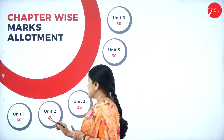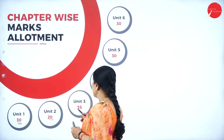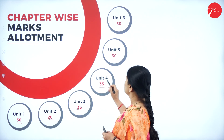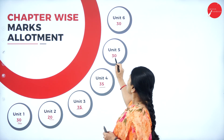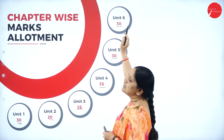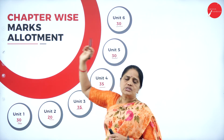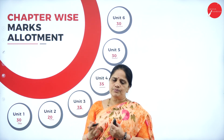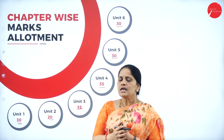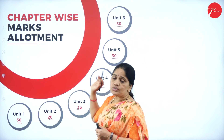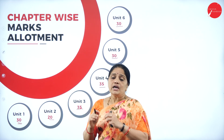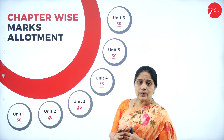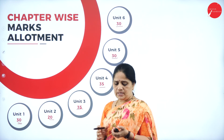For unit 2, it will be 20 marks. Unit 3, 35 marks. Unit 4, 35. Unit 5, 30. And unit 6, also 30 marks. Looking at this distribution of marks, you can see that almost all the chapters are equally important.